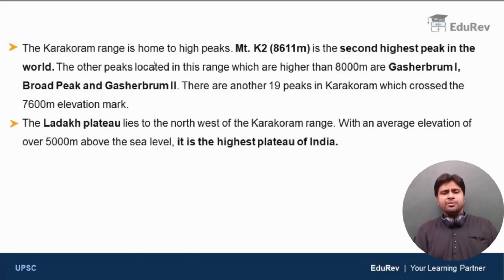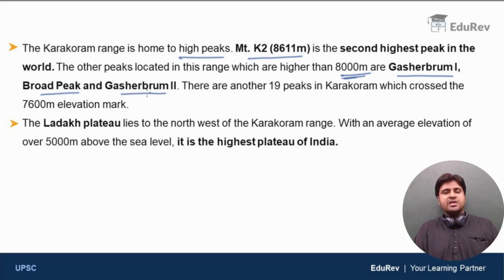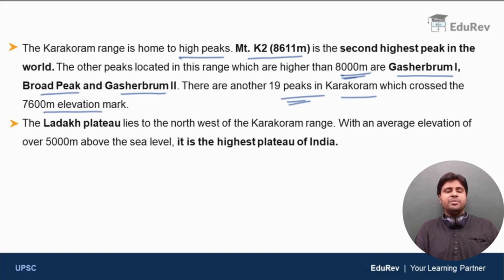The Karakoram Range is also home to very high peaks. Mount K2, whose elevation is 8,611 meters, is the world's second highest peak and is part of the Karakoram Range. Other peaks in this range that exceed 8,000 meters are Gasherbrum I, Broad Peak and Gasherbrum II. There are another 19 peaks in the Karakoram Range that cross the 7,600 meter elevation mark, making it one of the highest mountain ranges in the world.